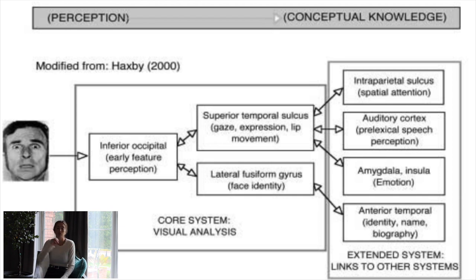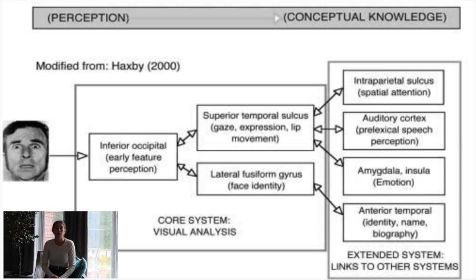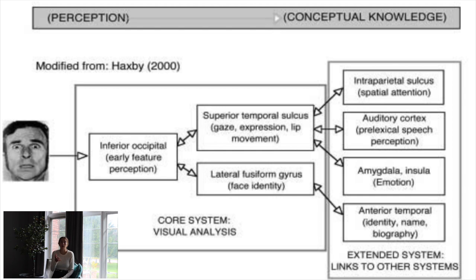For emotion, the visual information is sent to the superior temporal sulcus, or the STS. The STS looks at gaze, expression, and particularly lip movement. This information is then split up — some goes to the intraparietal sulcus, which is important for spatial attention, and some gets sent to the auditory cortex for pre-lexical speech perception. By looking at someone and seeing their mouth start to move, it helps tune in your auditory cortex for hearing what they're about to say.